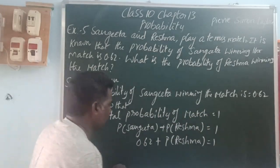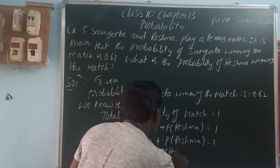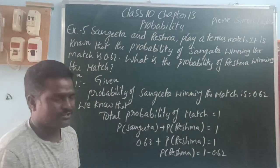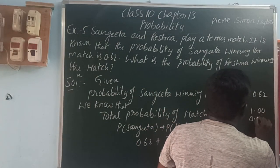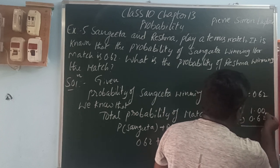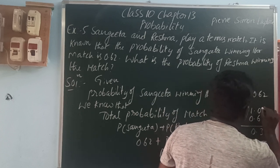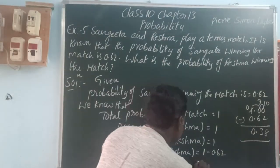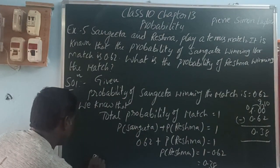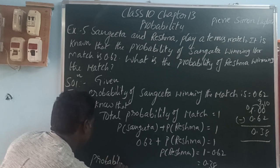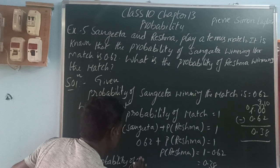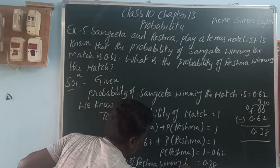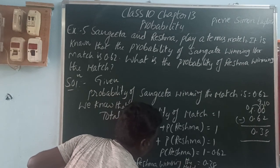So, 0.62 is moving to the other side as minus. We have probability of Reshma is equal to 1 minus 0.62. From 1, we can write as 1.00, and we subtract 0.62. So the probability of Reshma winning the match is 0.38.